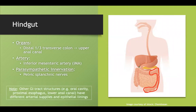An important point: we started with the distal esophagus and went all the way through the upper anal canal. Keep in mind that the oral cavity and the lower anal canal have different arterial supplies and epithelial linings — they're technically not part of the embryologic GI tract. But we will go over them in this lecture as we move forward.